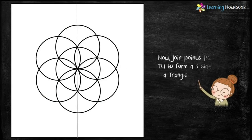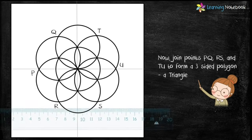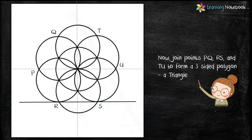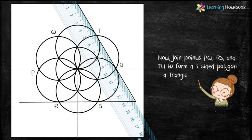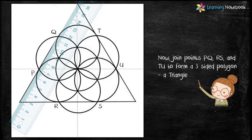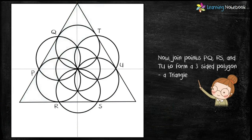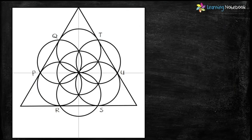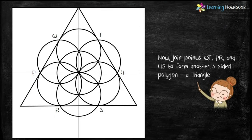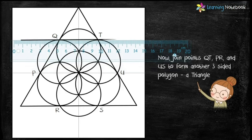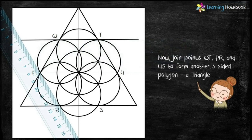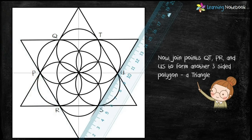Similarly take points C, D, E and F and draw circles with the same radius as shown here. So in total we have drawn seven circles of same radius. Now let's join points P, Q, R, S and T, U to form a three-sided polygon or triangle.